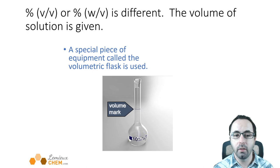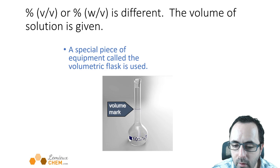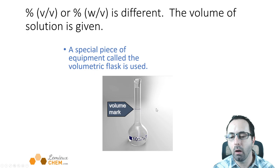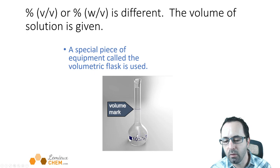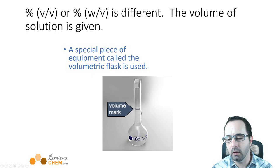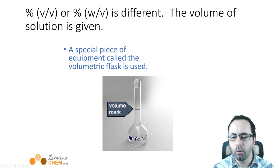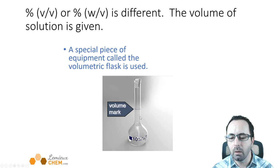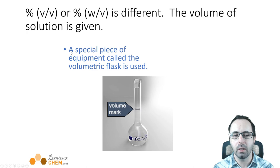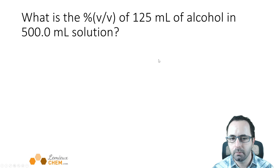With percent volume over volume or percent weight over volume, the volume of the entire solution is given. To make these solutions accurately, you use a volumetric flask — it has one line indicating very accurately the volume of your entire solution. You can't just add up volumes to get the overall volume, because sometimes when you mix things the volume of the mixture differs from the volumes when they were separate. So you put the solute in first, dissolve it in some solvent, and fill exactly to the line.